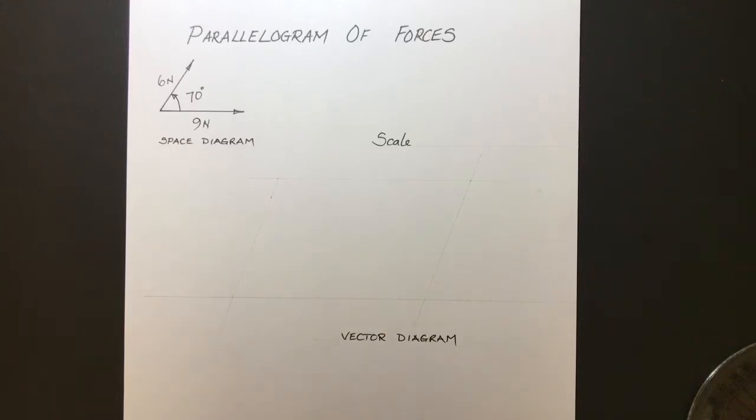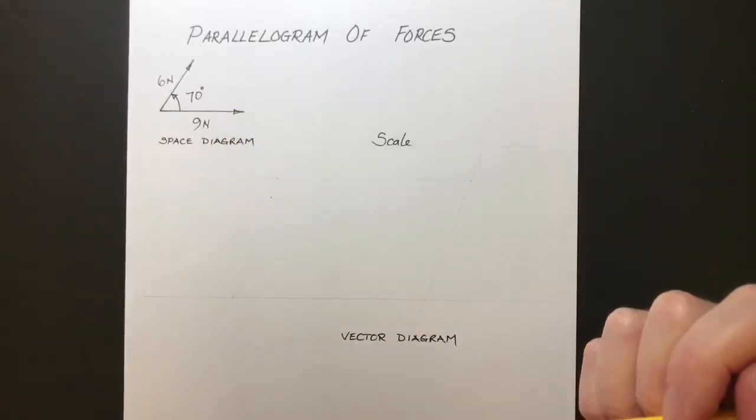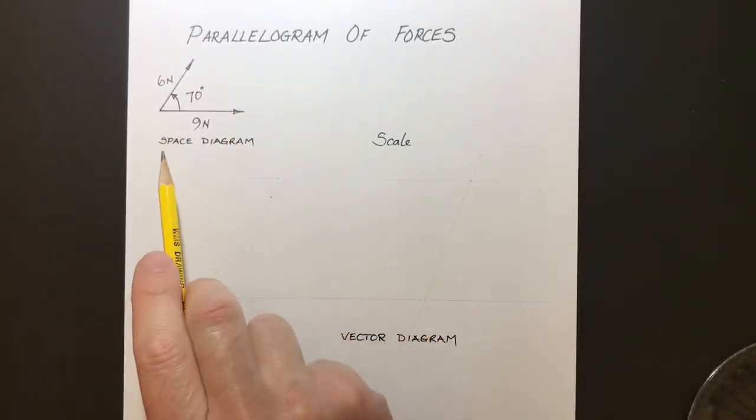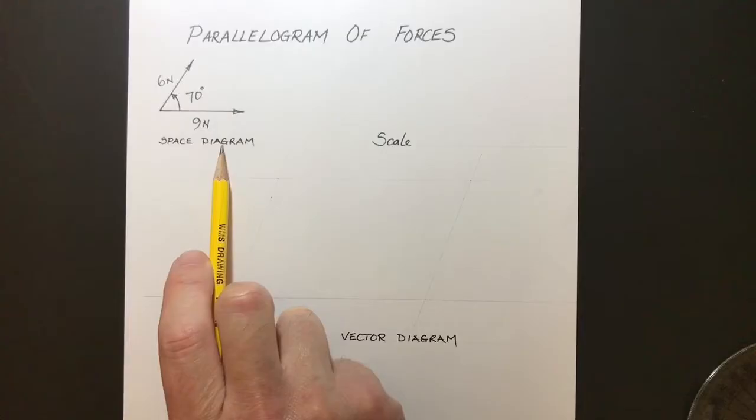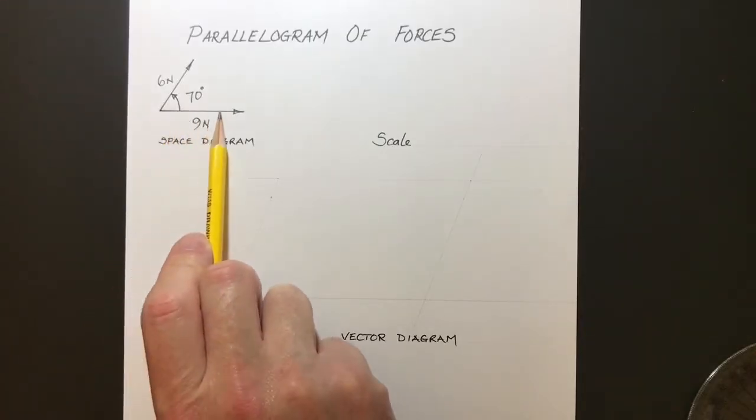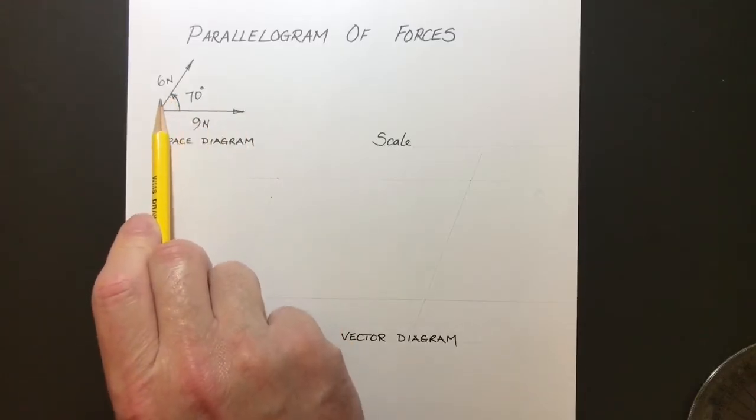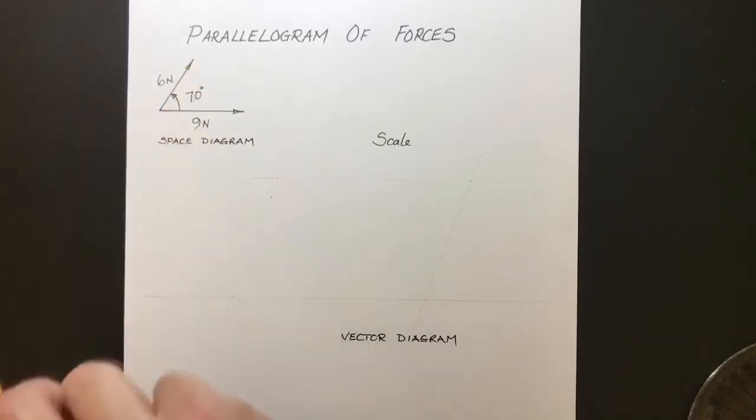This is a short video to introduce you to the parallelogram of forces method to find the resultant of two vectors. Over in the top here you can see we have a space diagram, and on our space diagram we have a 9 Newton force acting horizontally and then 70 degrees up from that we have a 6 Newton force.